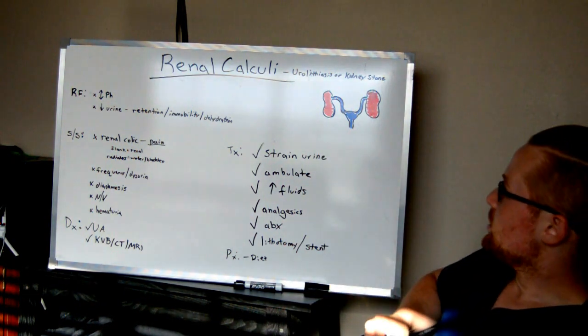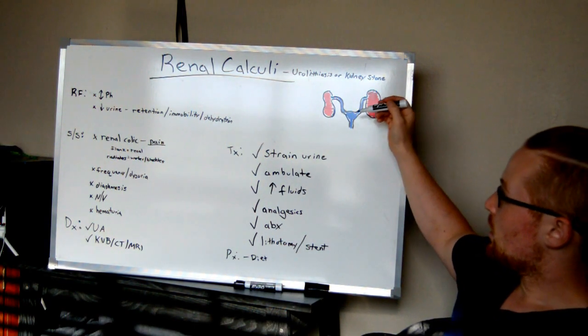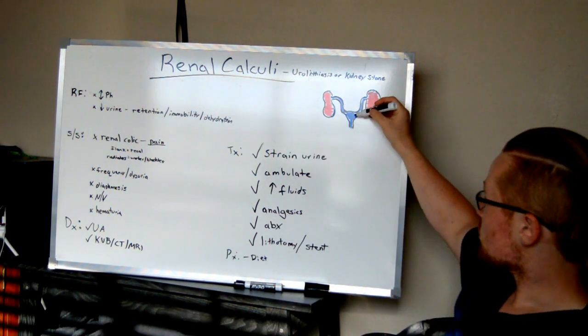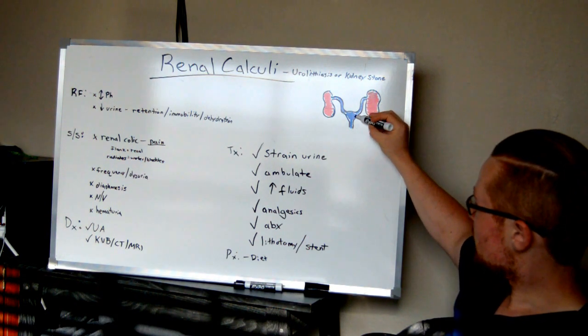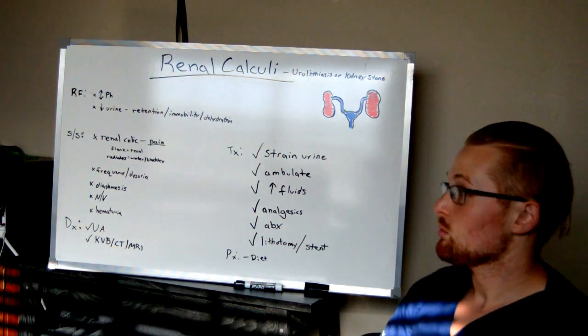So what it is, is you have a stone somewhere in your urinary system. Some may be in an easy spot where it's just in a bladder, and then it may be small enough that it can just pass on its own, of course with some signs and symptoms.